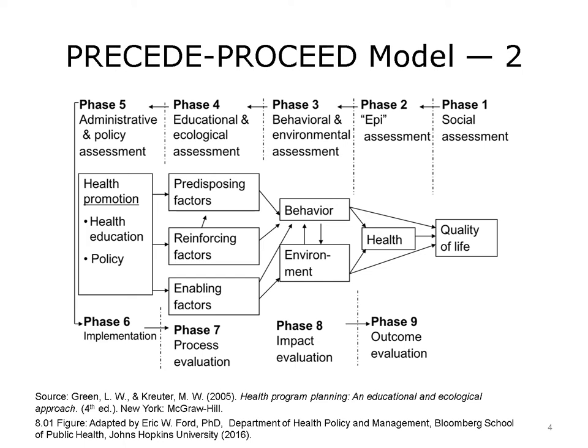Policy experts also need to assess if the program is likely to have support across elections. It is not unusual for one administration to support a program and for the next to cut it — building support is essential. In the case of the increased bike lanes example, a new administration may prefer to put the money towards parks or some other activity. Having half-built bike paths will not be a good outcome.